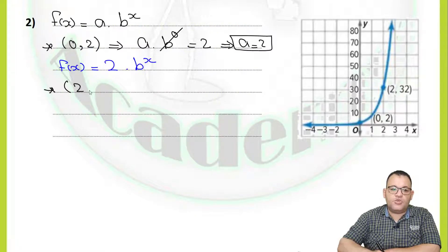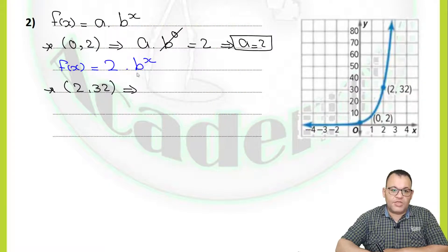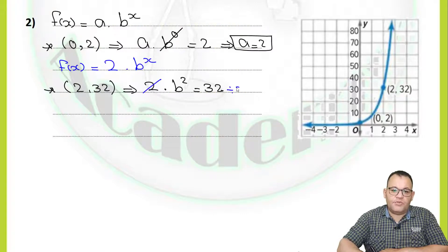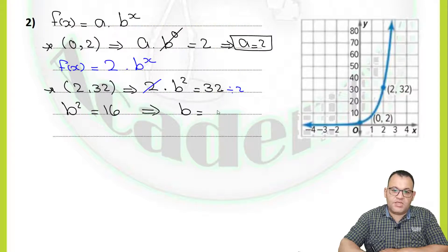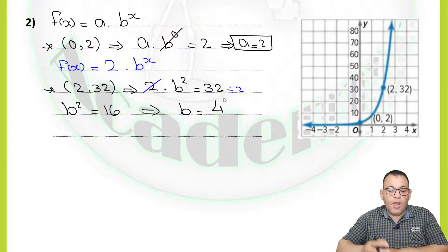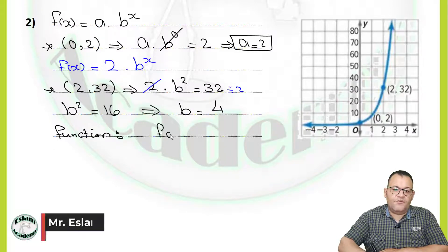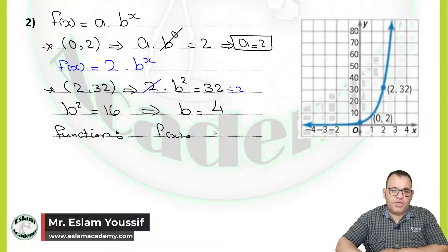Use the second point: (2, 32). Instead of x replace with 2, and instead of y replace with 32, using the second equation: 2 multiplied by b to the power 2 equals 32. We have 2, so divide by 2 — it means b to the power 2 equals 16. From that, b equals the square root of 16, which equals 4, because we need only the positive value. The base must be a positive value, so b equals 4.